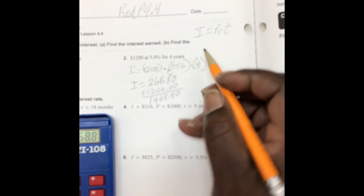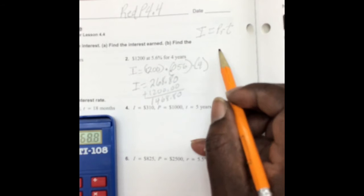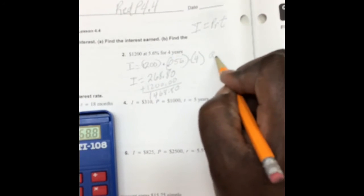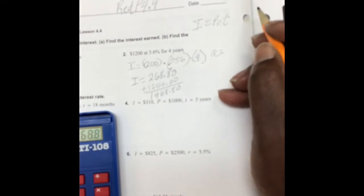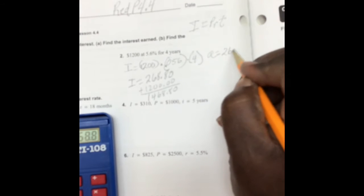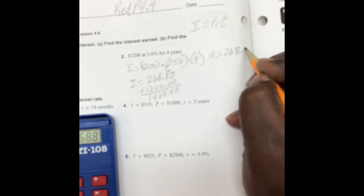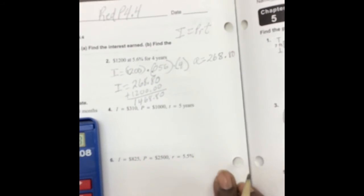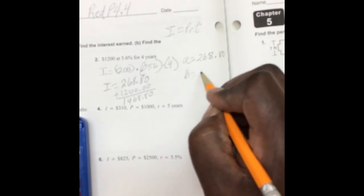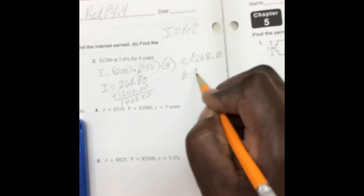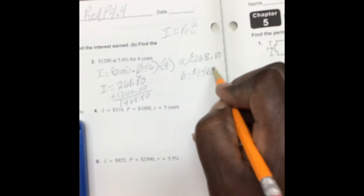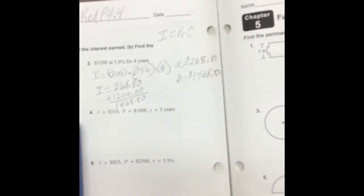Plus 1200 and then our balance is, that's our total amount. So A is equal to 268.80 cents and B is equal to 1,468.80 cents. Let's move on to number four.